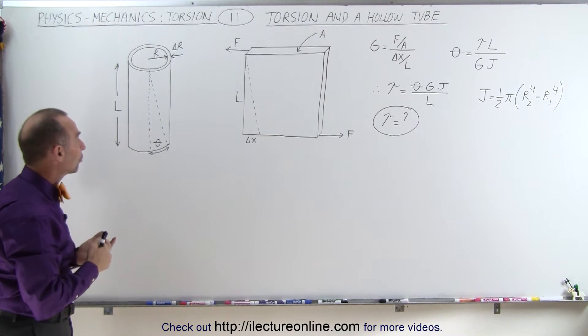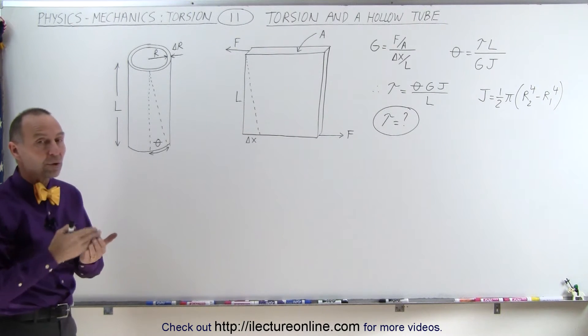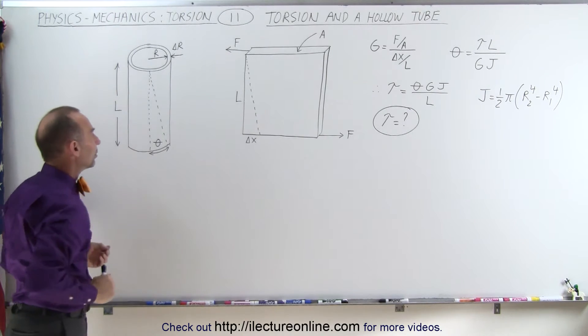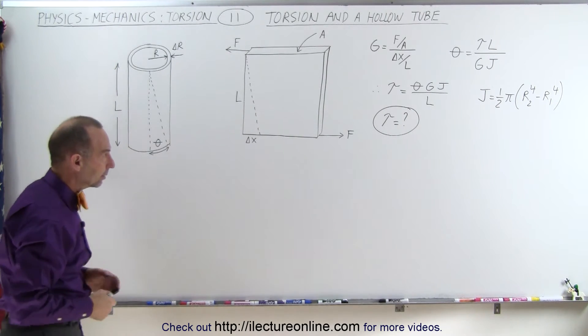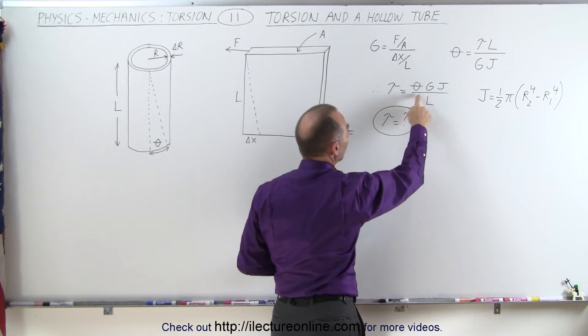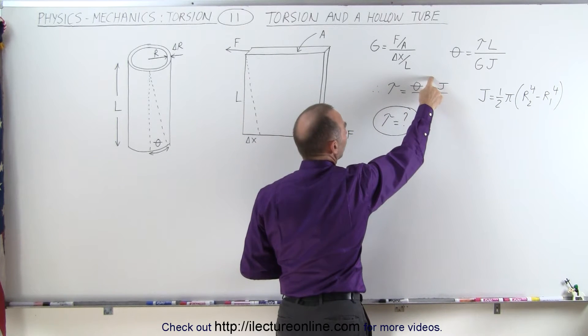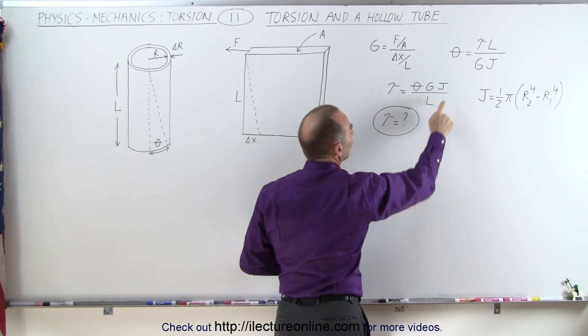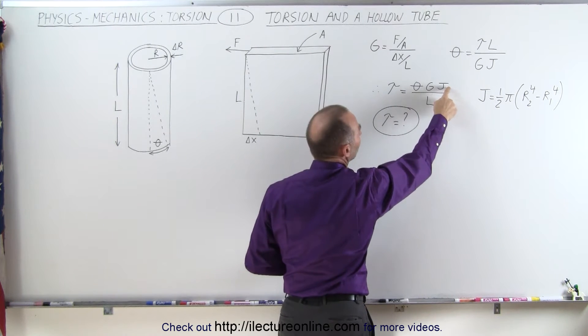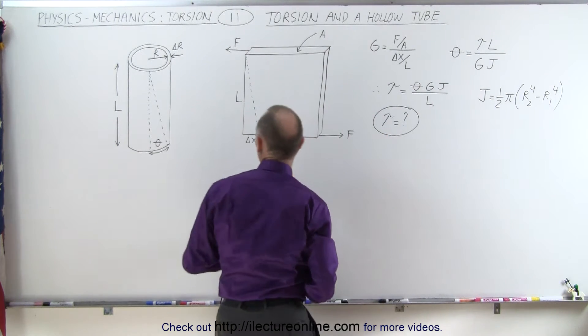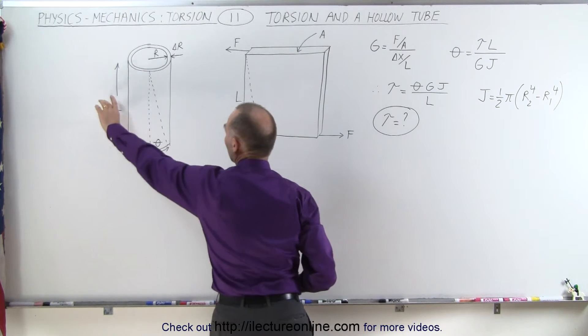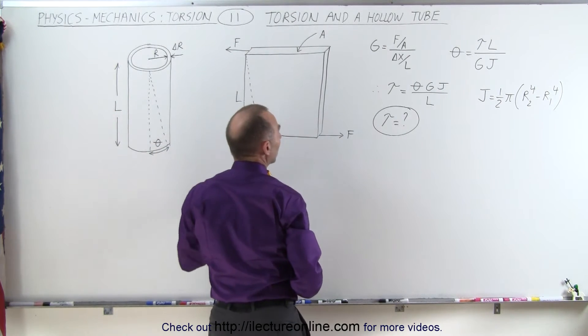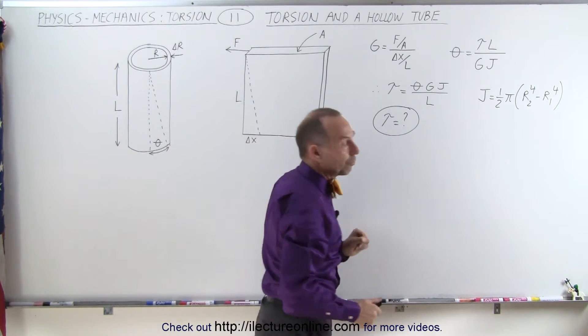What we're trying to do here is we're trying to find the torque required to achieve that angle based upon knowing what the twist angle is, knowing what the modulus of rigidity is, knowing what the torsional constant is, and knowing the length. So let's assume we know the length here and we know the angle theta. How do we get the modulus of rigidity?